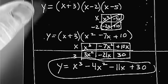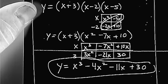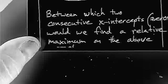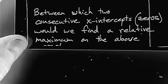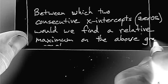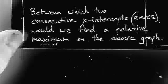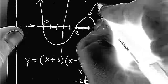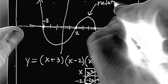Now, I'm not going to ask you what the relative max or min would be, but I'm going to ask you things like this. Between which two consecutive x-intercepts or zeros would we find a relative maximum on the above graph? So if I go back up there, relative maximum, that would be located here. That's a relative max.